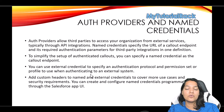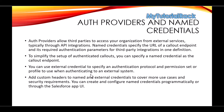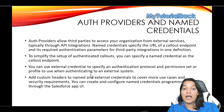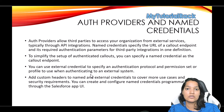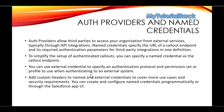So the first thing we will be doing in the next tutorial is creating an Auth Provider. Basically, Auth Providers allow third parties to access your organization from external services through API integration — similar to when you log into another app using your Google credentials. Then we are going to create a Named Credential to specify the endpoint of the external application we are connecting with, and while creating the Named Credential we will use External Credentials for authorization.